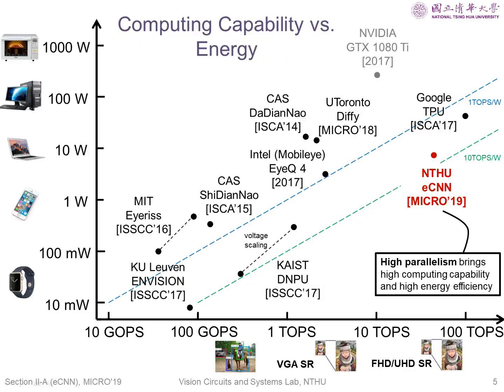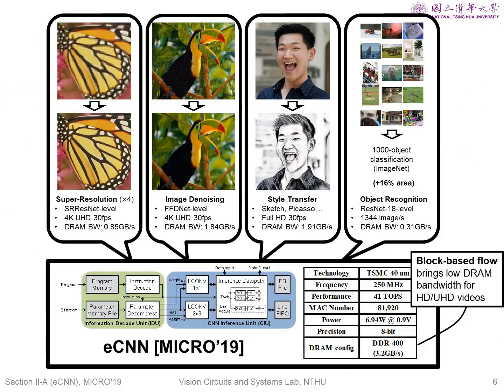Our results show that the highly parallel computing can bring high computing capability and high energy efficiency at the same time. And thanks to the block-based flow, we can also achieve high-quality and high-performance super-resolution, denoising, style transfer, and ImageNet recognition, all with simple DDR400 memory.